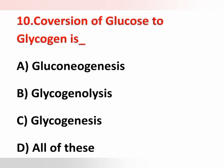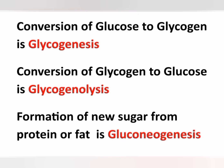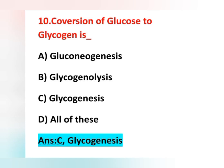Tenth question: conversion of glucose to glycogen is called? Options are: option A, gluconeogenesis; option B, glycogenolysis; option C, glycogenesis; option D, all of these. The correct answer is option C, glycogenesis. Conversion of glucose to glycogen is glycogenesis; conversion of glycogen to glucose is glycogenolysis; and formation of new sugar from protein or fat is called gluconeogenesis. These are all important points.